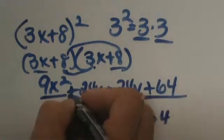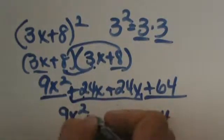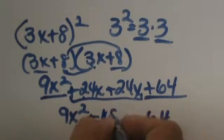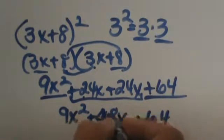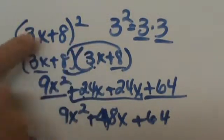Now for the middle term you can add those and combine those together and they add up to 48, so we have a positive 48x. So there is a little pattern going on here from the original problem.